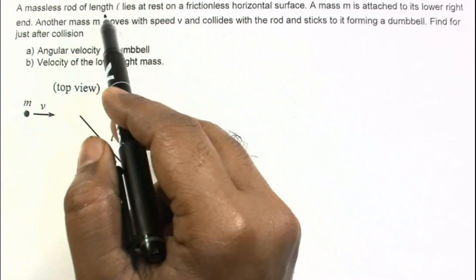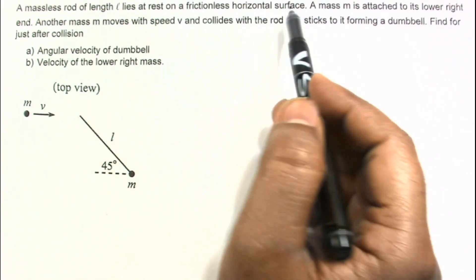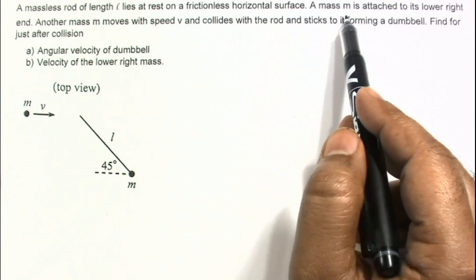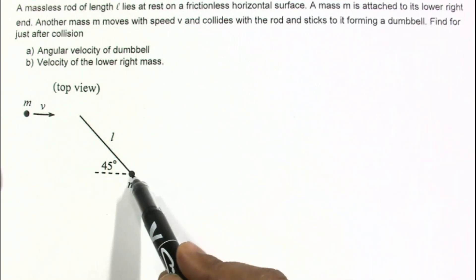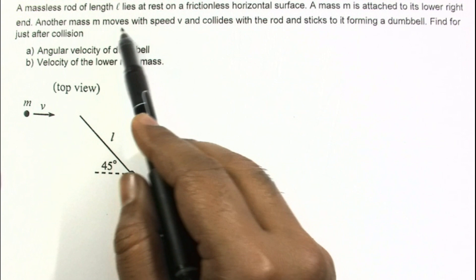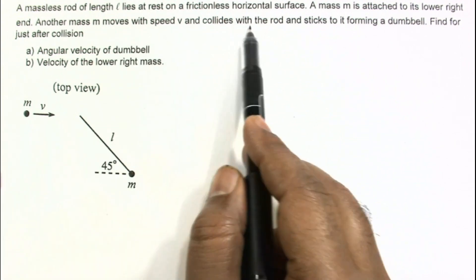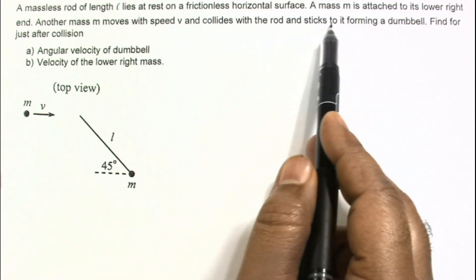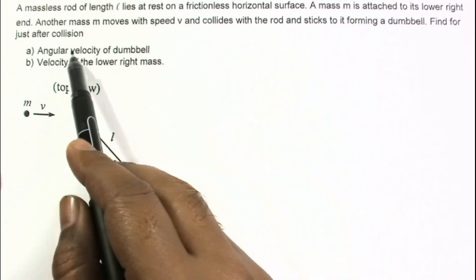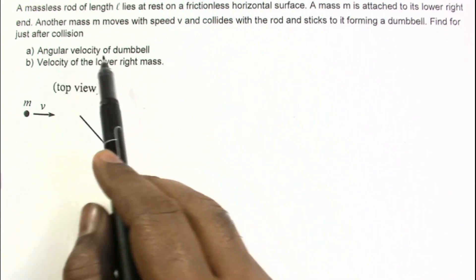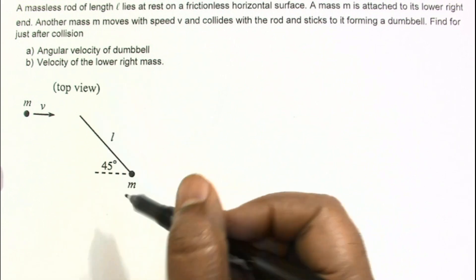In this problem, a massless rod of length L lies at rest on a frictionless horizontal surface. A mass M is attached to its lower right end, as shown in the figure. Another mass M moves with speed V and collides with the rod and sticks to it, forming a dumbbell. Find, for just after the collision, the angular velocity of the dumbbell and the velocity of the lower right mass.